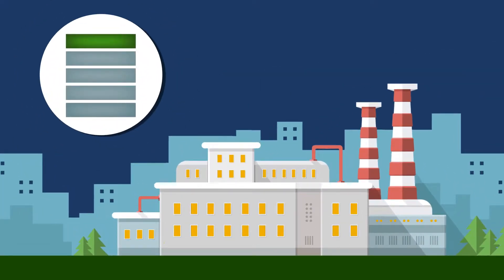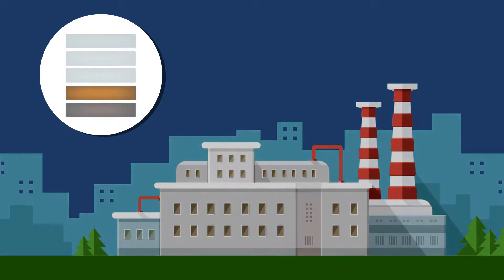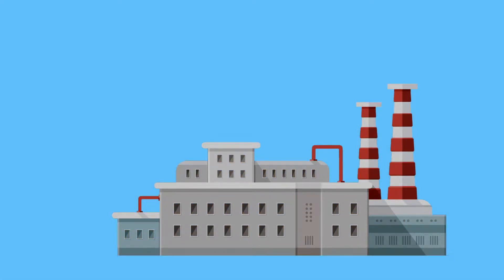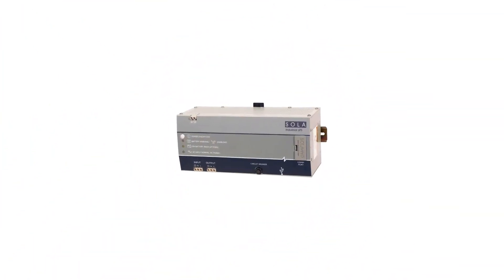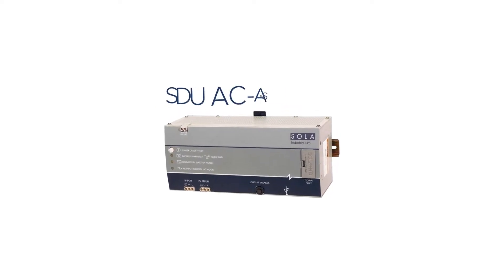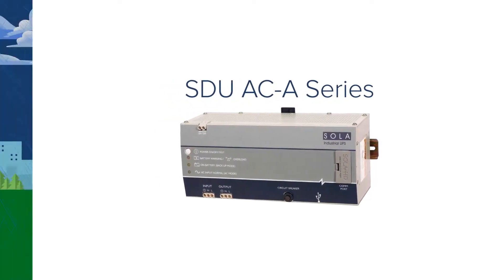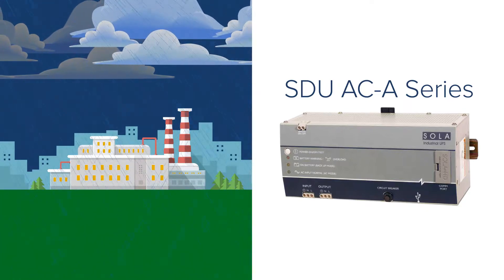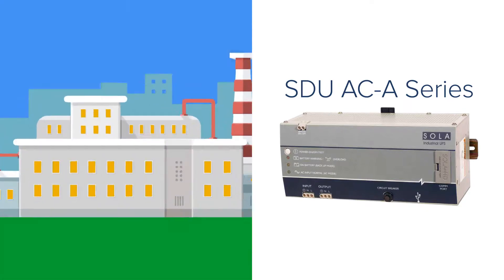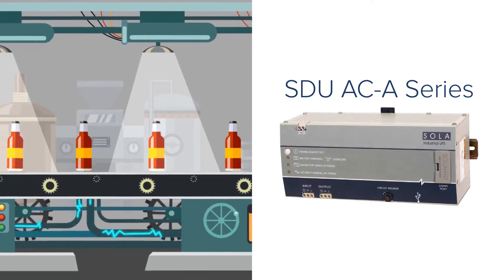Having the ability to perform controlled shutdowns during a power disturbance could save beverage bottling facilities and other commercial and industrial workspaces costly downtime. With Sola HD's newest uninterruptible power supply, the SDUAC-A series, you'll find a superior solution to power disturbances and interruptions whether they happen due to a storm or are a result of an internal facility disturbance.